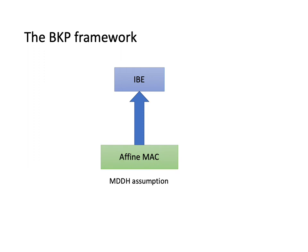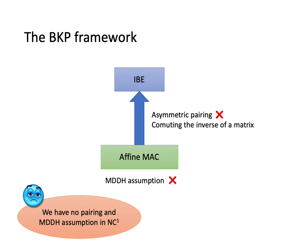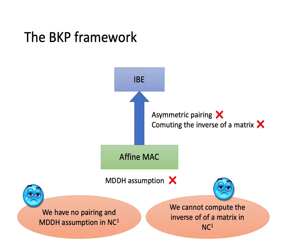Our construction of fine-grained IBE borrows the BKP framework. Recall that in this framework, the IBE is constructed from an affine MAC which is secure under the MDDH assumption. The construction heavily relies on the symmetric pairing and it is necessary to compute the inverse of the matrix in the security proof. However, we have no pairing and MDDH assumption in NC¹. And we cannot compute the inverse of the matrix in the NC¹ world.